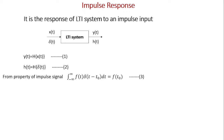From the property of the impulse signal, we know that the integral from minus infinity to plus infinity of f(t) δ(t − t₀) dt equals f(t₀). That is, if any signal f(t) is multiplied by a shifted impulse — shifted by an amount equal to t₀ — and integrated over the whole time from minus infinity to plus infinity, we get the function value at t = t₀, because only at t = t₀ does δ(t − t₀) equal 1, and for all other times it is 0. So when we integrate over the whole interval, we get the function value at t₀.